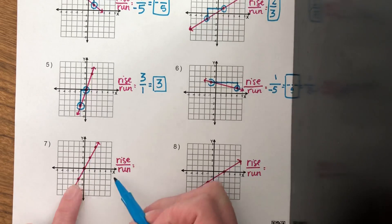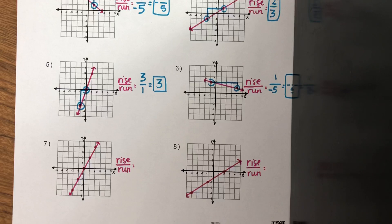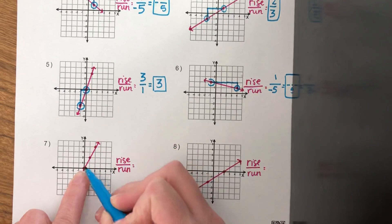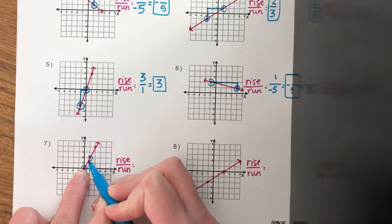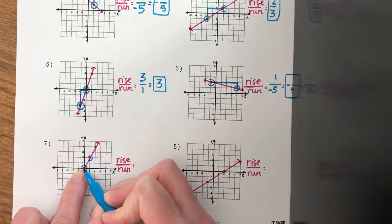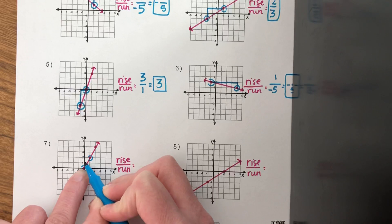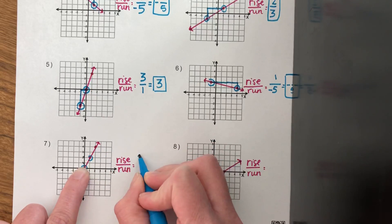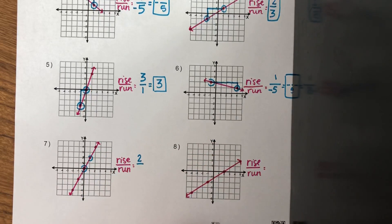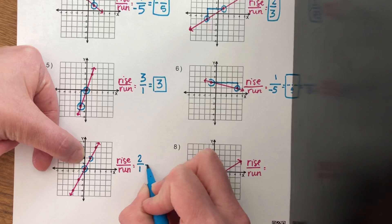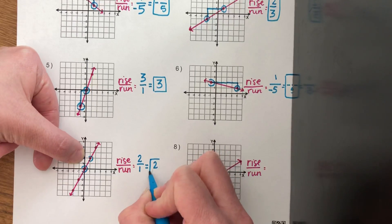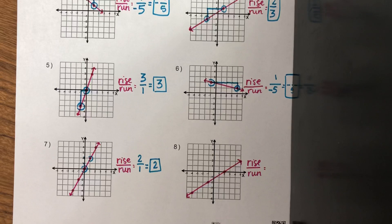Number seven — positive or negative? It should be positive. I'm going to pick between two points and start at the bottom. Don't start counting where that point is sitting; your first movement is the first count. I went up one, two — so my rise is a positive two. And I go over one to the right; right is a positive movement. So my run is positive one, and two over one is two.